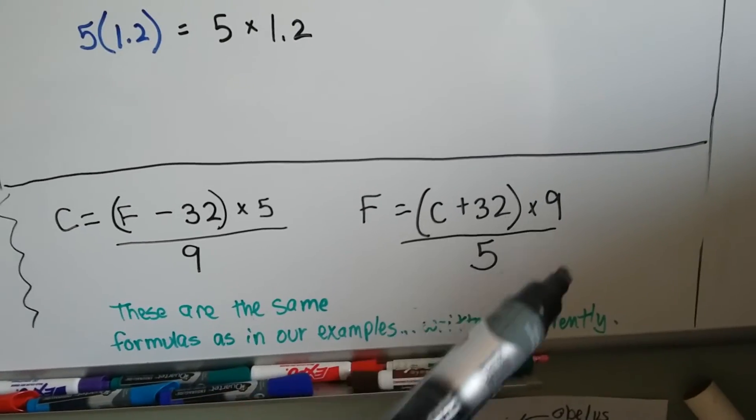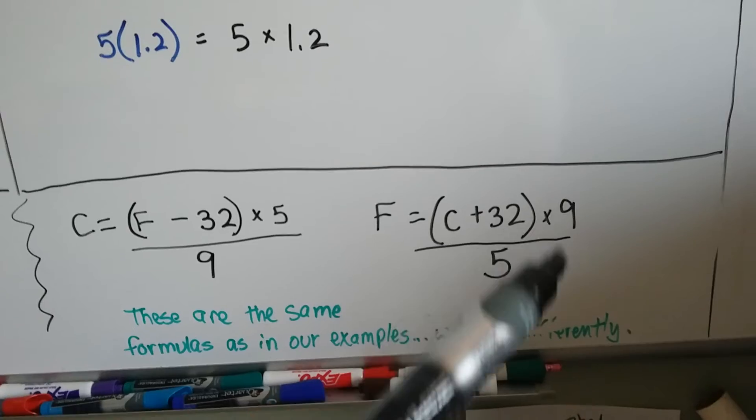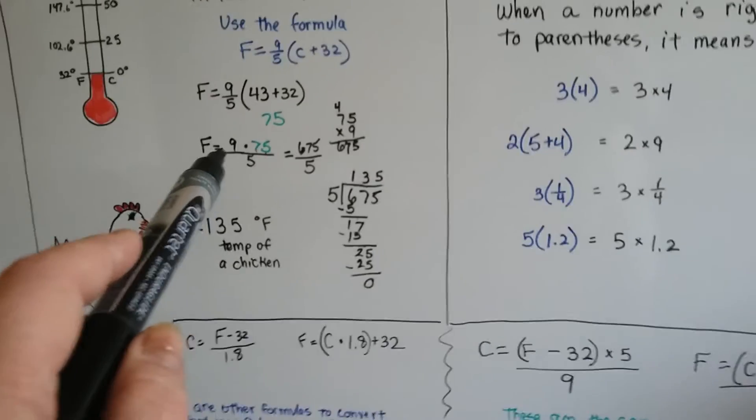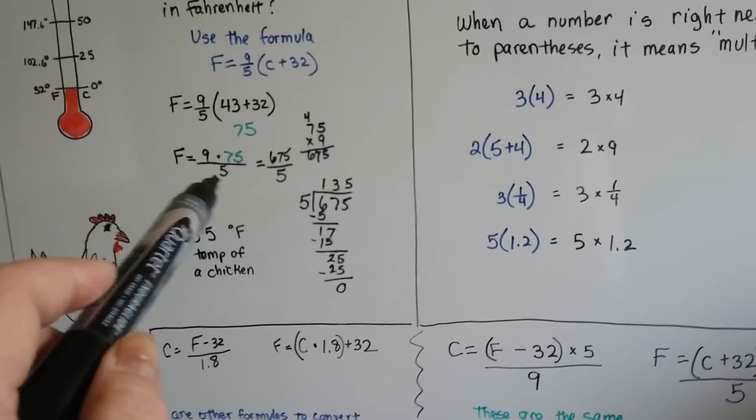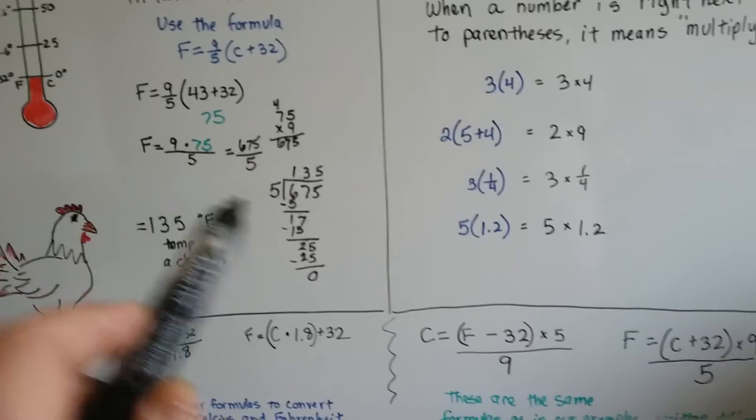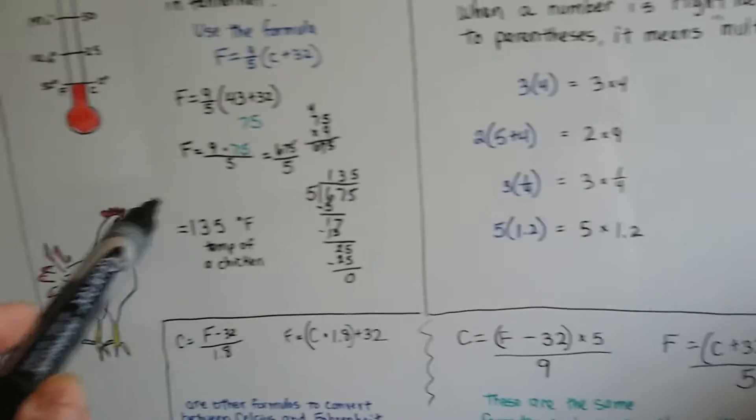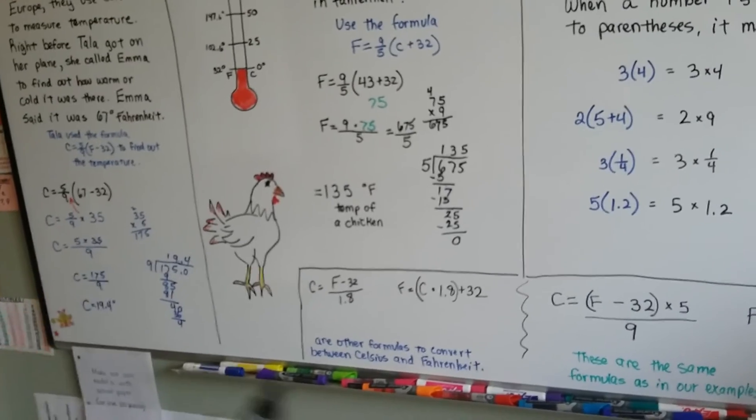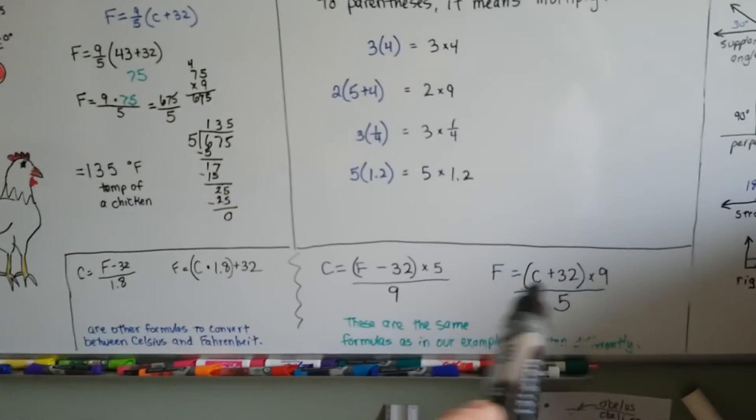Same thing here. Instead of putting the 9 fifths as a fraction by itself on the side, they put the whole thing over the 5. And that's basically what I did. I did put the 9 times 75 over the 5 for the Fahrenheit. And I did put the 5 times 35 over the 9 for the Celsius when I solved it.